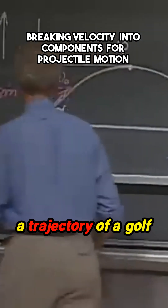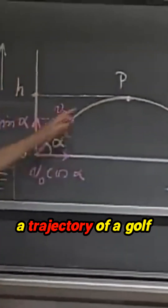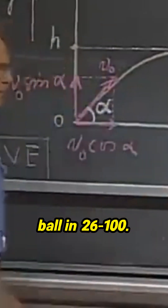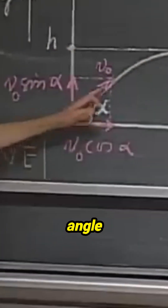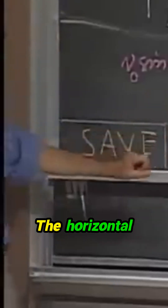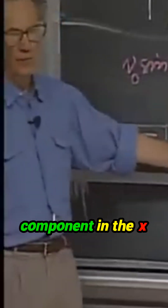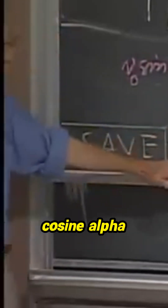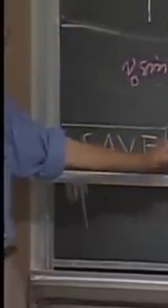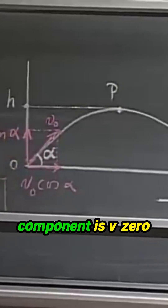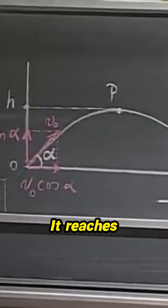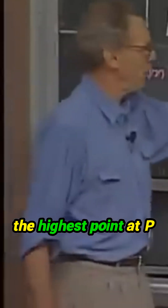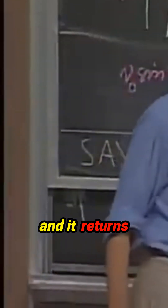We have here a trajectory of a golf ball or a tennis ball. We shoot it up at an angle alpha. The horizontal component in the x-direction is V zero cosine alpha, and the vertical component is V zero sine alpha. It reaches the highest point at P and it returns to the ground at point S.